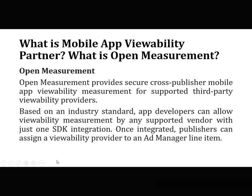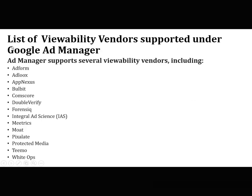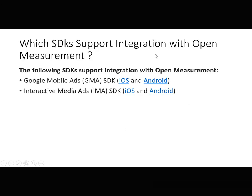Once integrated, publishers can assign a viewability partner to an Ad Manager line item. The list of viewability vendors supported under Google Ad Manager includes: AdForm, AdLooks, Adnxs, Bulbit, Comscore, DoubleVerify, Forensiq, Integral Ad Science, Metrics, Moat, Pixeled, Protected Media, Timo, and White Ops. The following SDKs support integration with Open Measurement: Google Mobile Ads (GMA) SDK, IronAndroid, and Interact Media Ads.